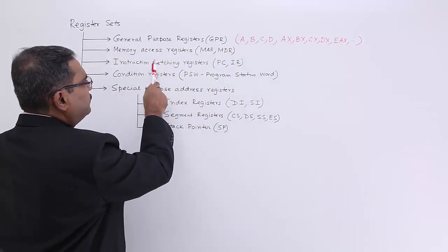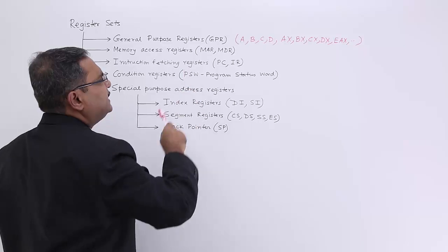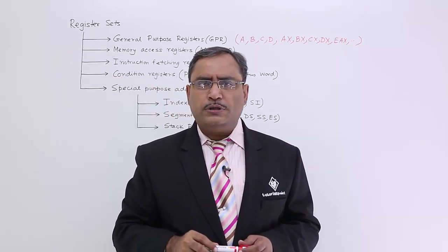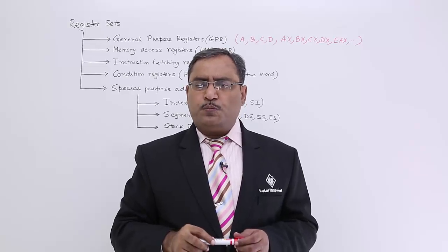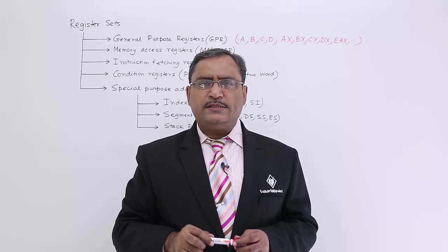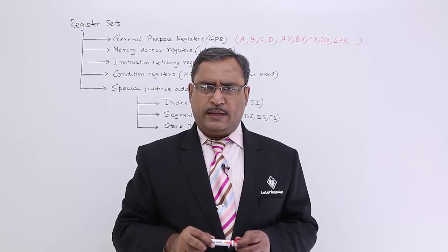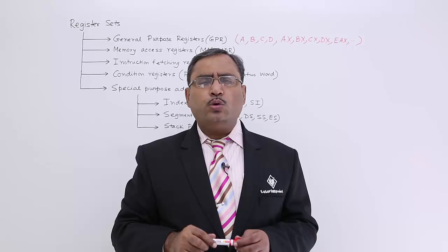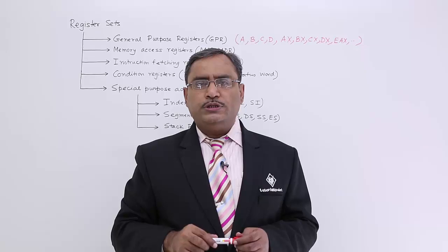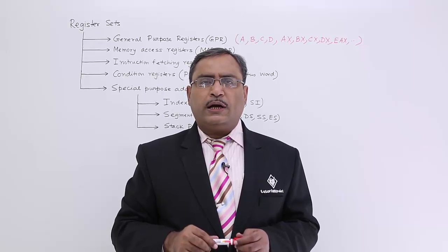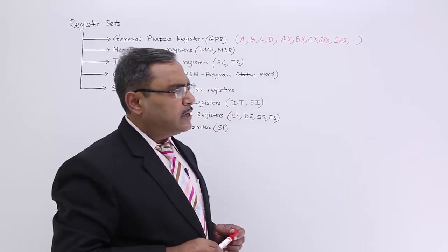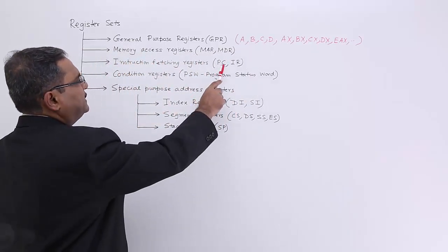In the case of instruction fetching registers, we have PC and IR. PC — program counter — is that register which is pointing to the memory location from where the next instruction is to be fetched. PC has an auto increment feature. The instruction register (IR) is that register which holds the copy of the current instruction in execution. So for instruction fetching, the registers are PC and IR.